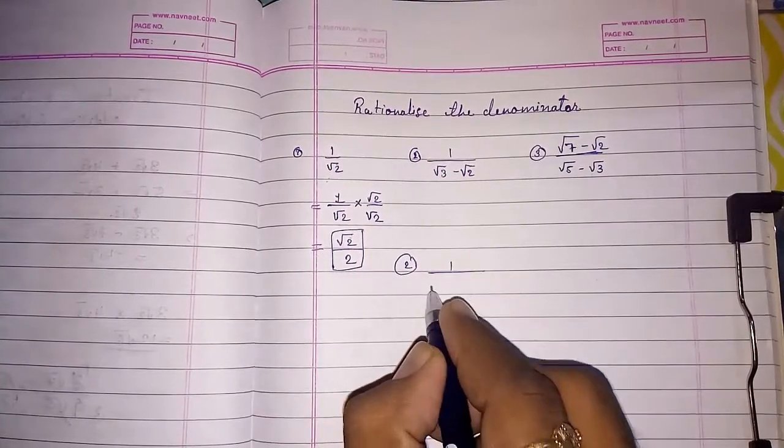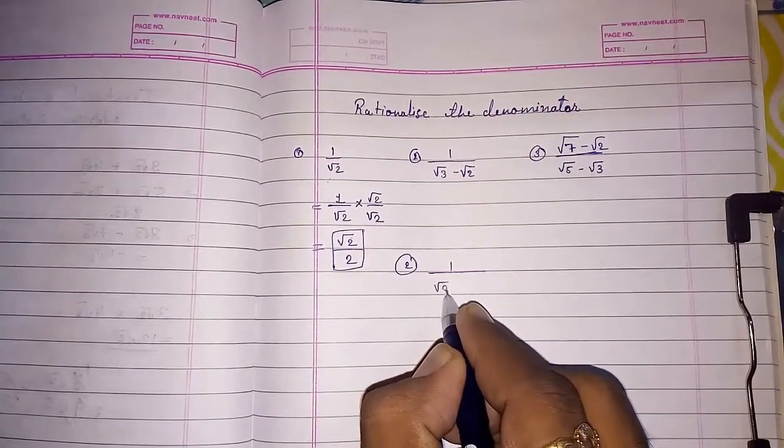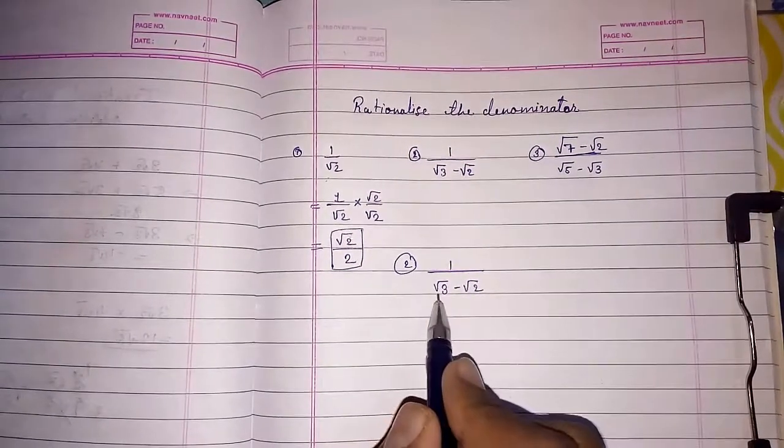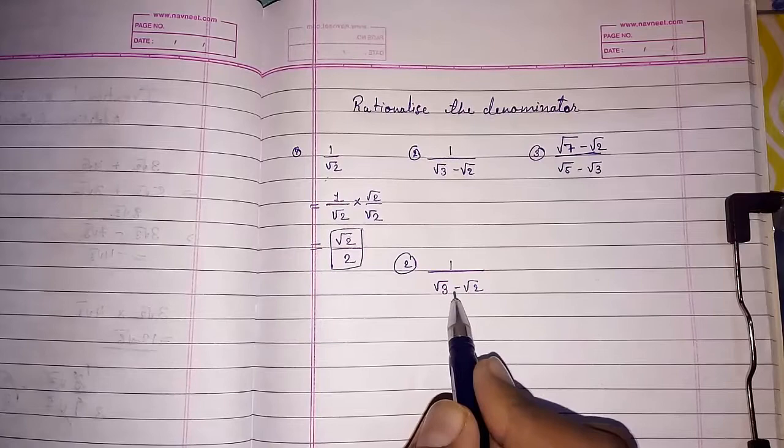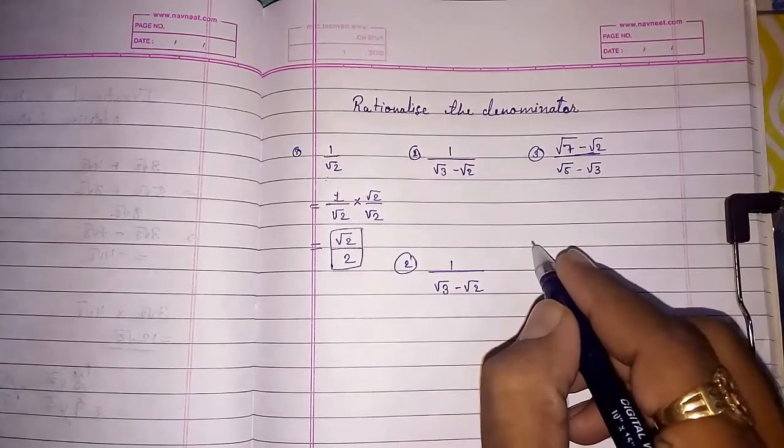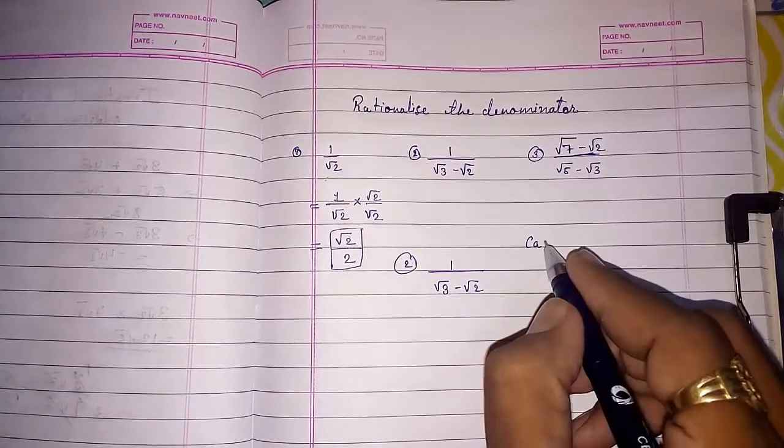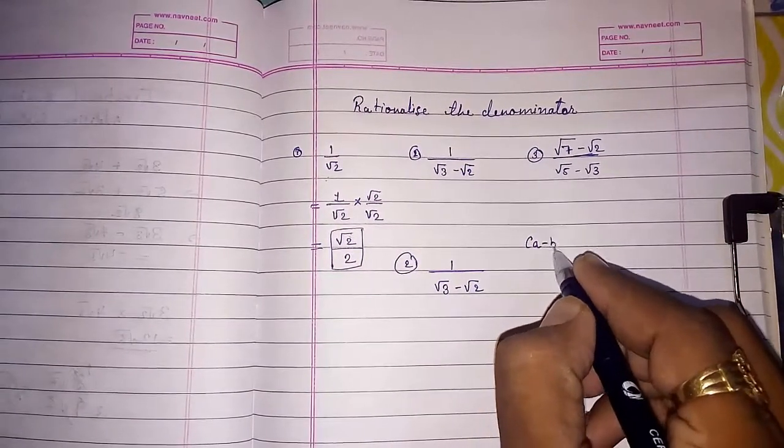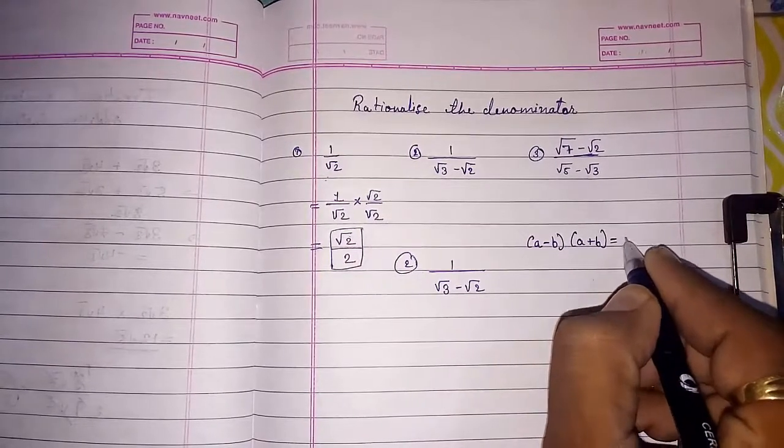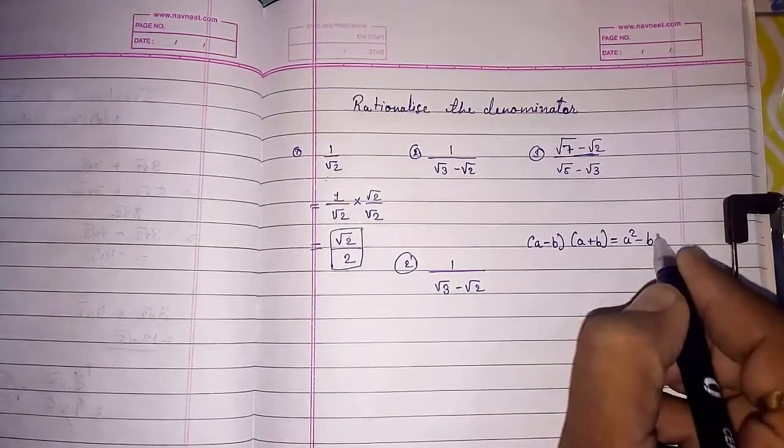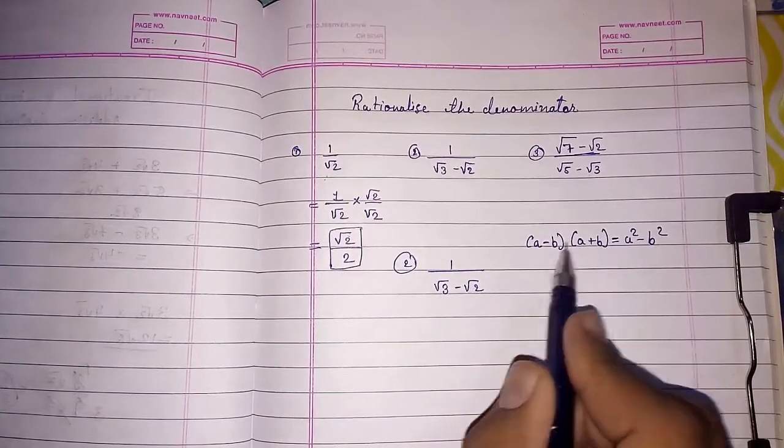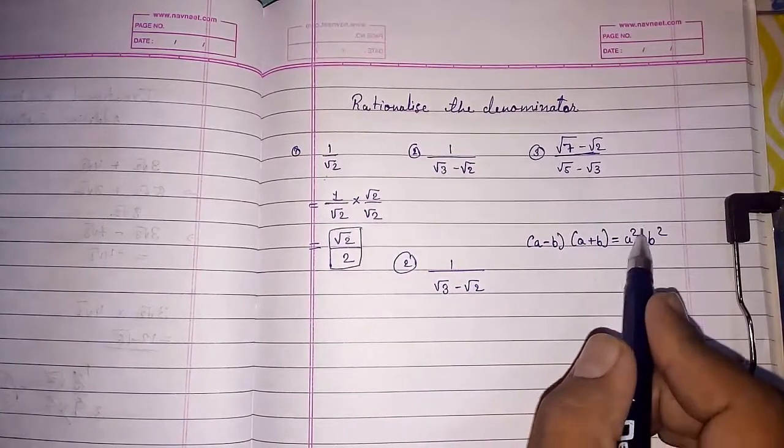One by root three minus root two. For removing these two numbers are there. We should know the identity, identity third which we learned in previous standard also. A minus B into A plus B gives you A square minus B square. Look here what they had done. A minus B, A plus B and the two numbers get square.